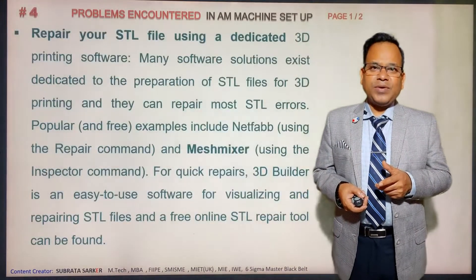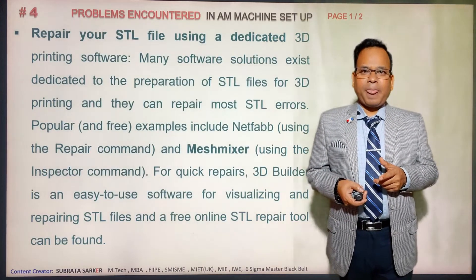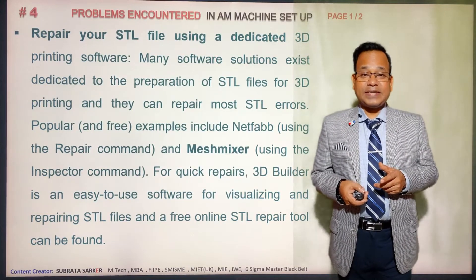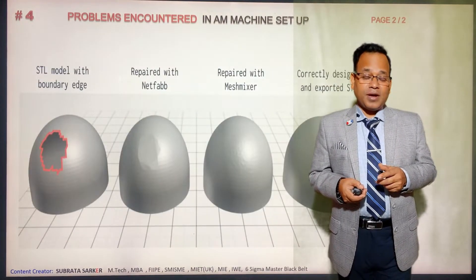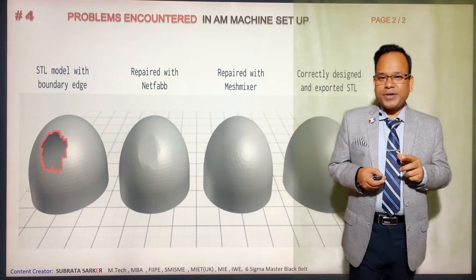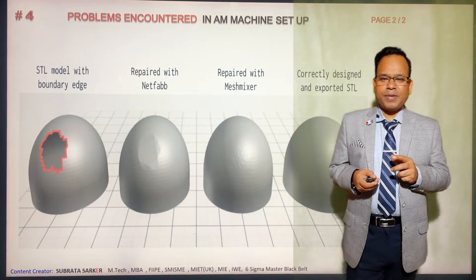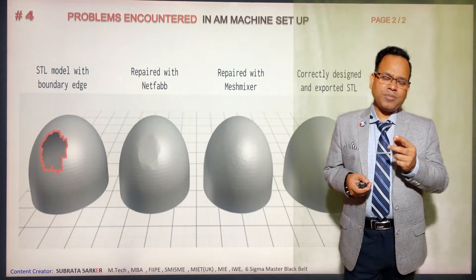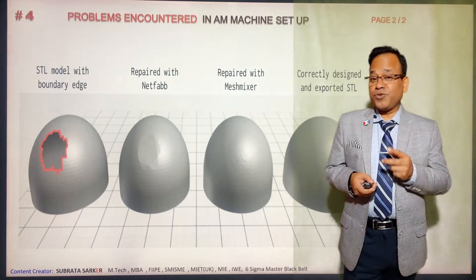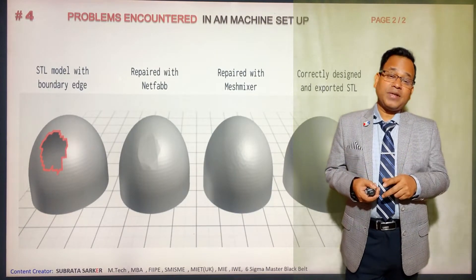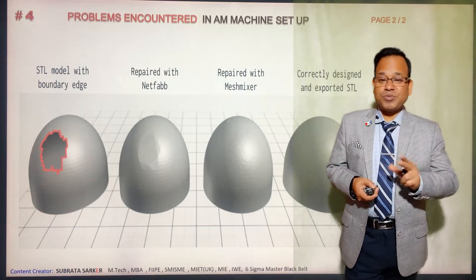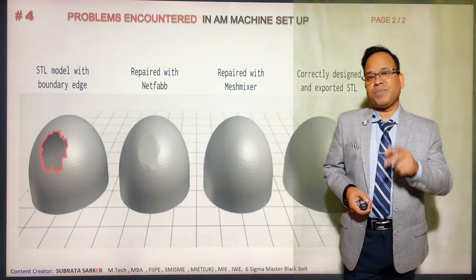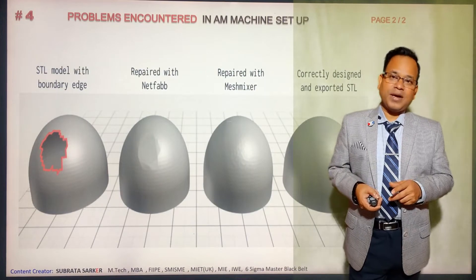Step four is the machine setup and repair of the STL file. For example, you can see in this picture a round component that has some error from the 3D model creation, and the machine will show a hole. If you do not repair this, you must repair it in different stages until you get a smooth surface, and then you can send it to the machine for making the actual component.